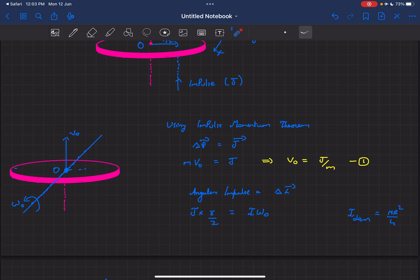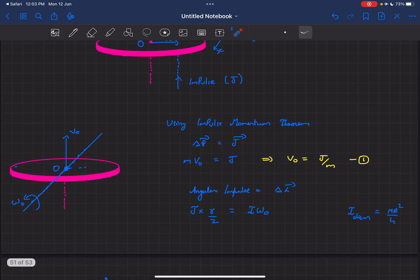Let's assume after the impulse being provided, the coin translates up with a velocity of v₀, and it starts rotating about this axis passing perpendicular to the plane of the paper.